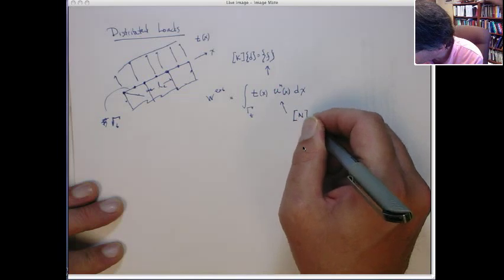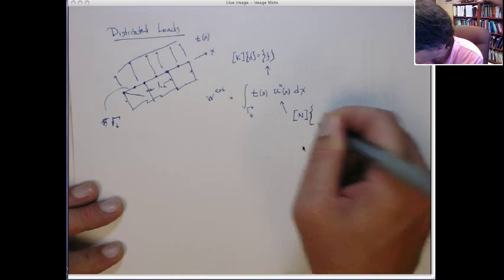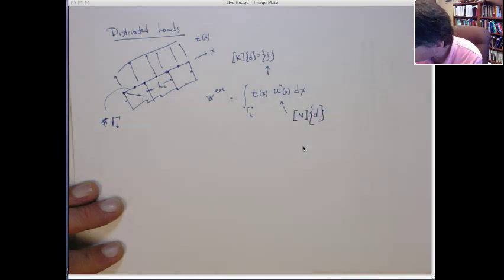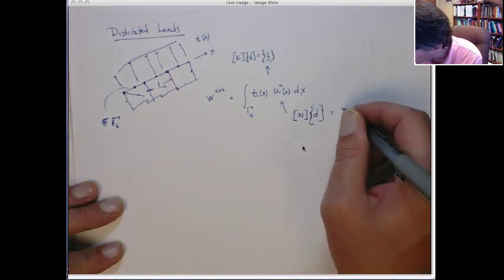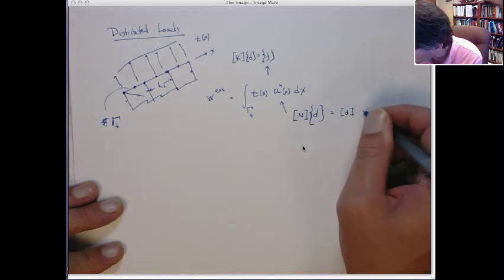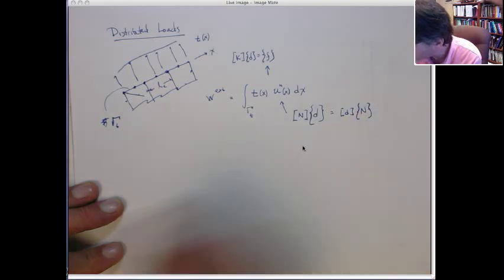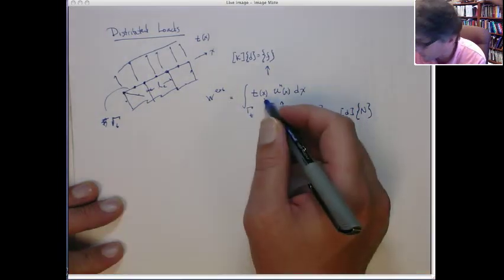So I can write this as the row vector of the nodal displacements multiplied by the column vector of the shape functions, basically the dot product of those two. We'll leave this as a known function. Let's assume we can do this.